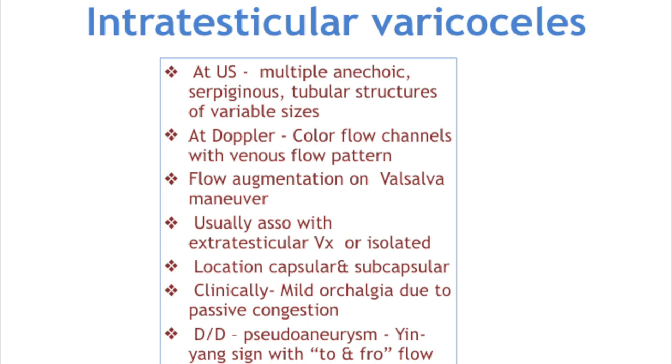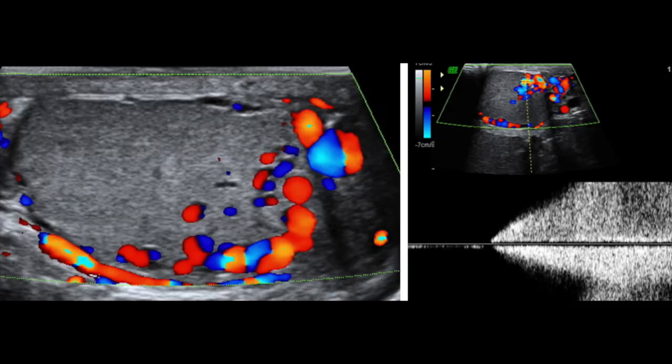Intratesticular varicoceles are multiple anechoic serpiginous or tubular structures of variable size in the testis, particularly in the periphery or subcapsular area. On color Doppler, color flow channels are seen with a venous flow pattern. Blood flow augmentation and reversal on Valsalva maneuver are also seen. Intratesticular varicoceles are usually associated with extratesticular varicoceles but may be isolated. These lesions should be differentiated from pseudoaneurysms, which show a yin-yang sign and to-and-fro flow on color Doppler.